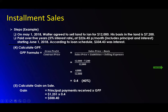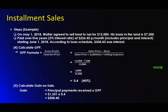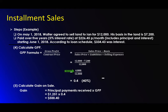Next we have to calculate the gross profit percentage. Our GPP is the sales price minus basis over the sales price plus liabilities plus selling expenses. Our sales price was $12,000. His basis was $7,200. There were no liabilities and no selling expenses. So it's $12,000 minus $7,200 over $12,000 — that's $4,800 over $12,000 — equals a 40% gross profit percentage.